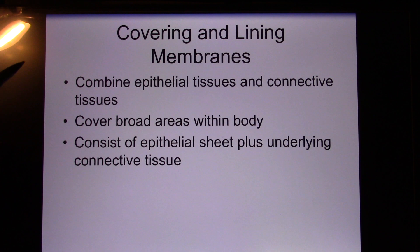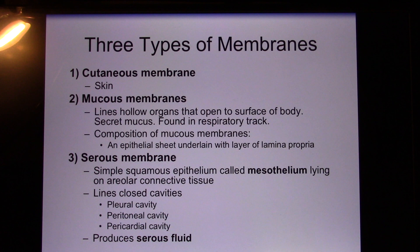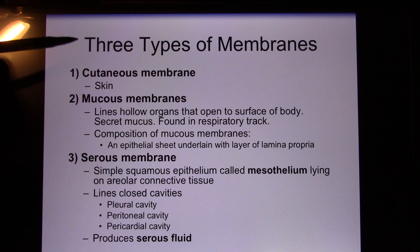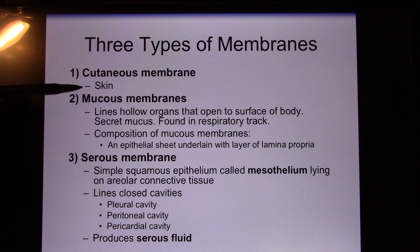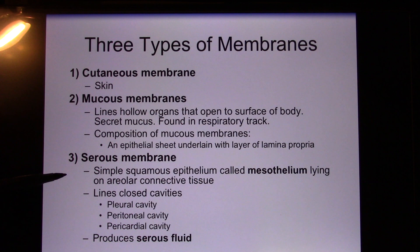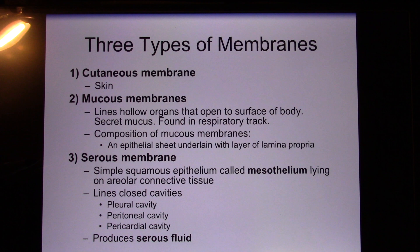We can combine epithelium and connective tissue together — that's called a membrane. We have different kinds: cutaneous membrane (your skin), mucous membrane (produces mucus, found in your airway and GI tract), and serous membrane (simple squamous epithelium that covers cavities). The pleural cavity, peritoneal cavity, and pericardial cavity are all lined with serous membrane, and they produce serous fluid.